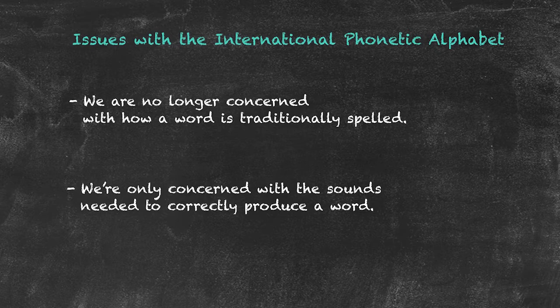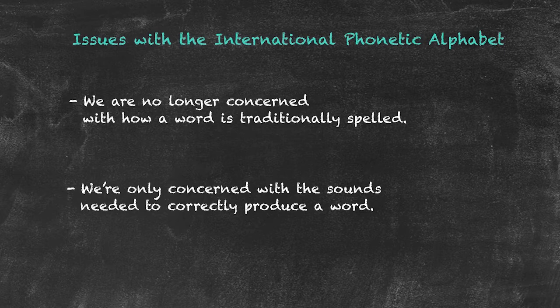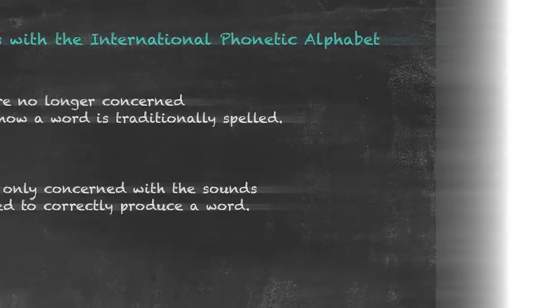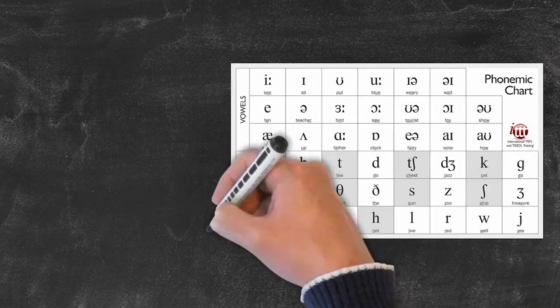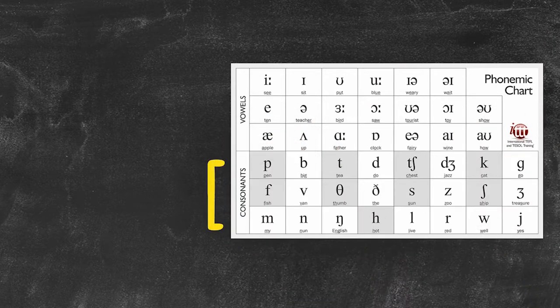Doing that successfully is related to manner and place of articulation, which will be covered shortly. To get a better understanding of the phonemic alphabet, let's take a look at our chart. In the bottom half of our chart, we have our consonant sounds.